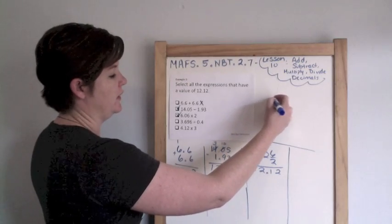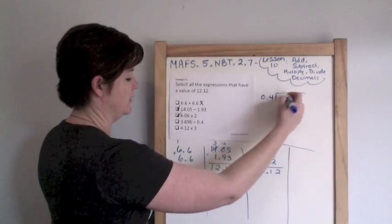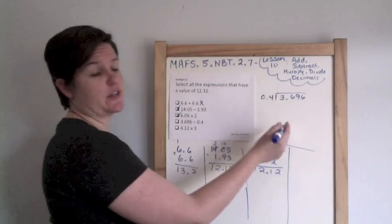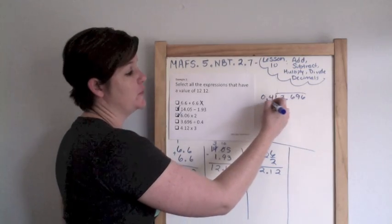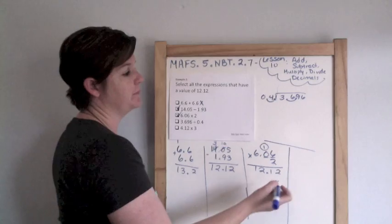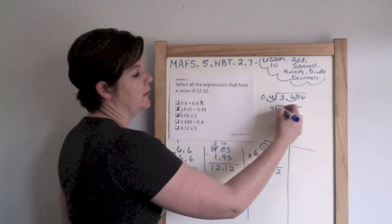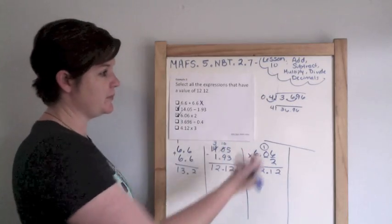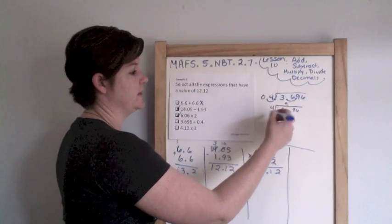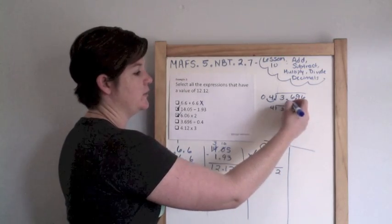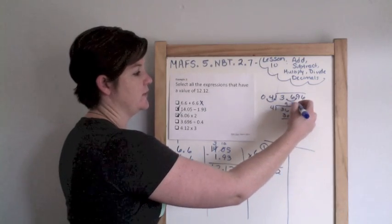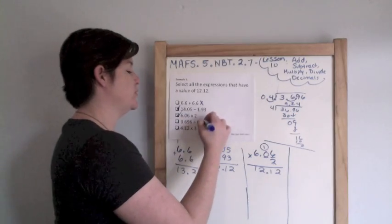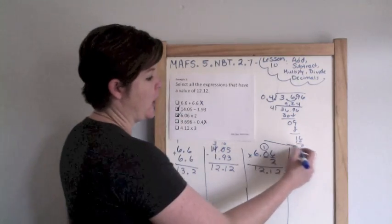Okay. Let me see. I'm going to do this one up here. 0.4 tenths, and 3 and 696 thousandths. There is a rule when you are dividing that you cannot have decimals here in the divisor. So I'm going to move my decimal point over like that. And because I moved it over one place, I'm going to move it over one place here. So when I rewrite that, it now looks like 36 and 96 hundredths, which is the same thing. They're equivalent. So we can solve this out. 4 goes into 36 nine times. 9 times 4 is 36. 0. Bring down the 9. Goes into it 2 times. That's 8. 16. Goes into it 4 times. That's 16. So 0. And bring my decimal point up. So 9 and 24 hundredths is not the same thing as 12 and 12 hundredths. So that is wrong. So all that work for nothing.